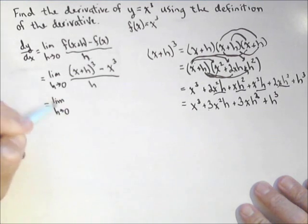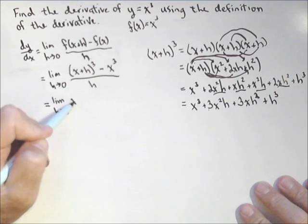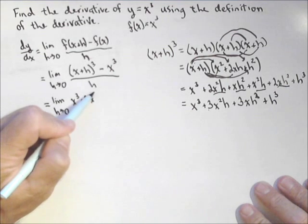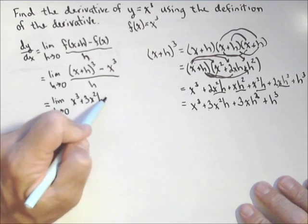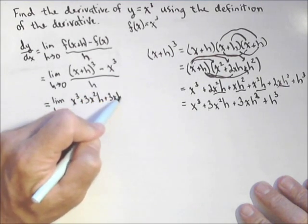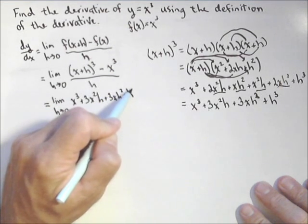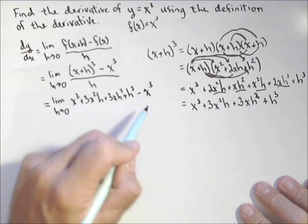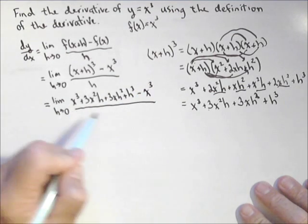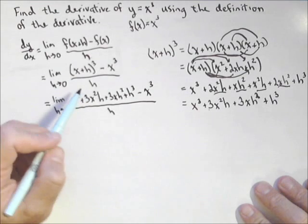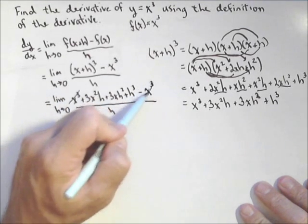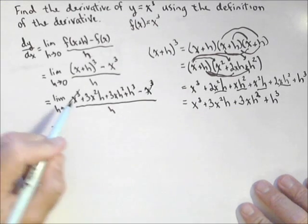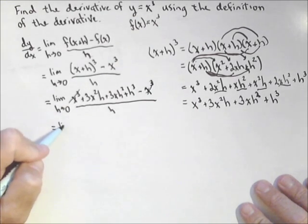So we have the limit as h goes to zero of x³ + 3x²h + 3xh² + h³, and then finally, don't forget the minus x cubed—that's actually very important—all over h. Because now those x cubes cancel. And we get a very important fact, which is that every term in the numerator now has an h in it.